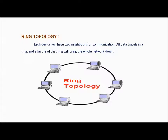The next is ring topology, where all the devices in the network are structured in a ring-like format. All devices will have two neighbors. The main disadvantage of this topology is if a particular device goes down, the entire network will be down.